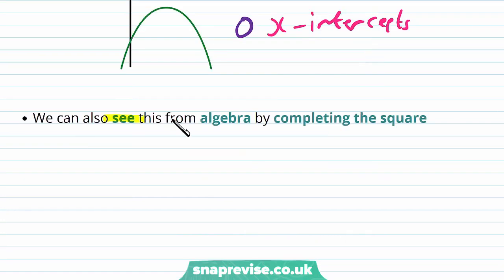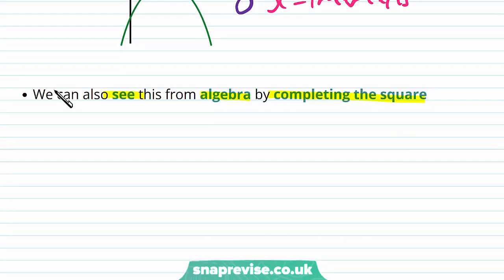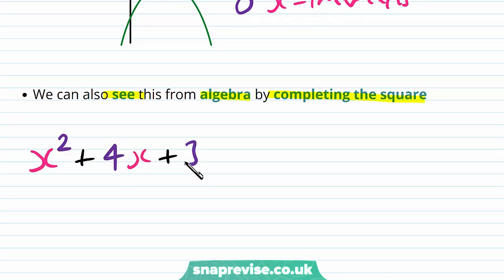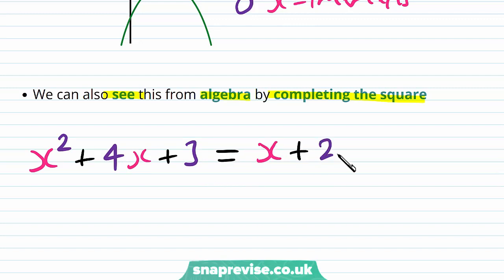We can also see this from algebra by completing the square. If we take x-squared plus 4x plus 3 and we complete the square, then we're going to get x plus 2 all squared — i.e. half of the middle term — and then we have a minus 1.